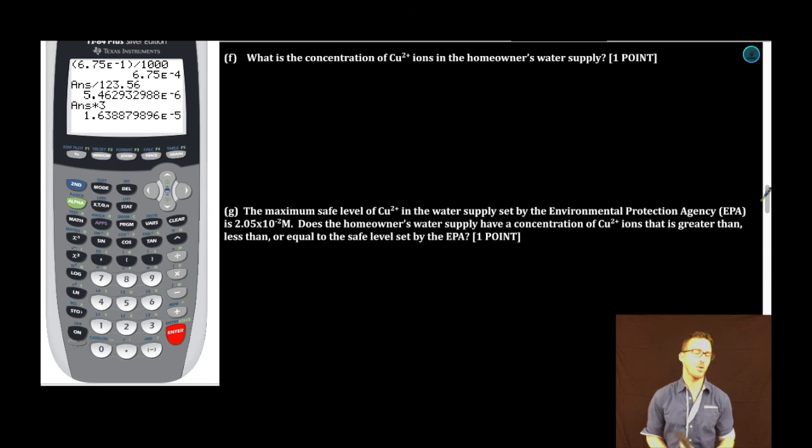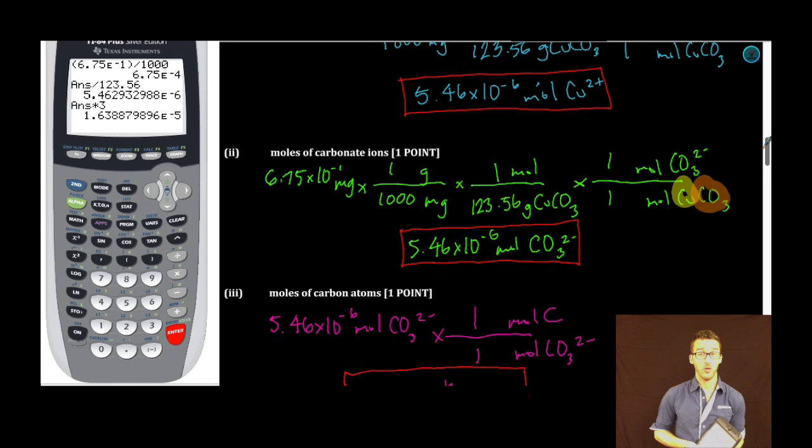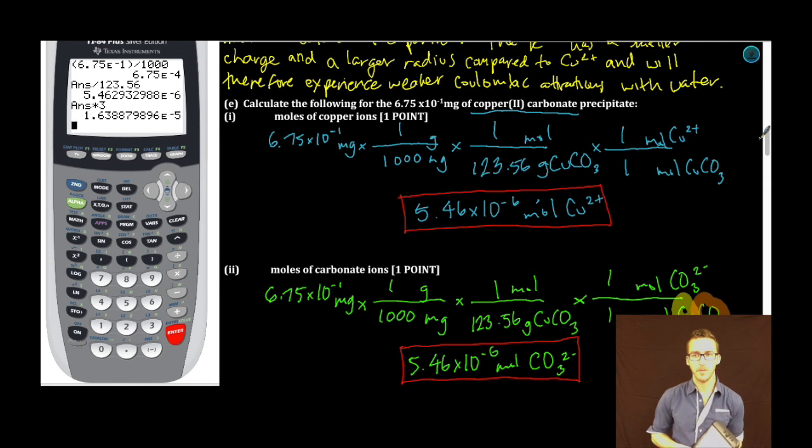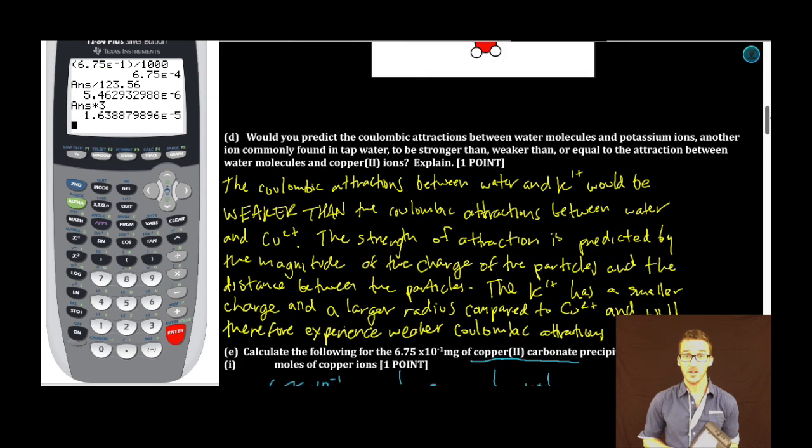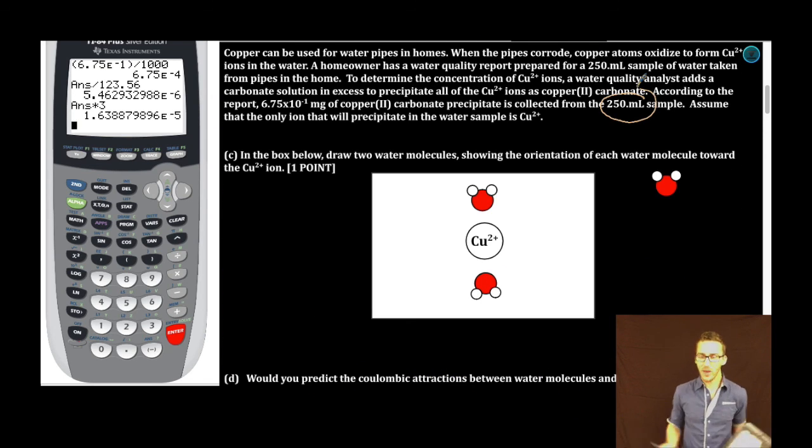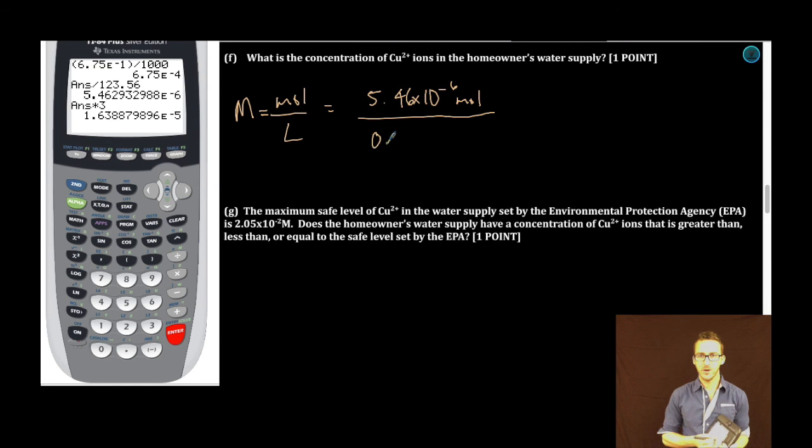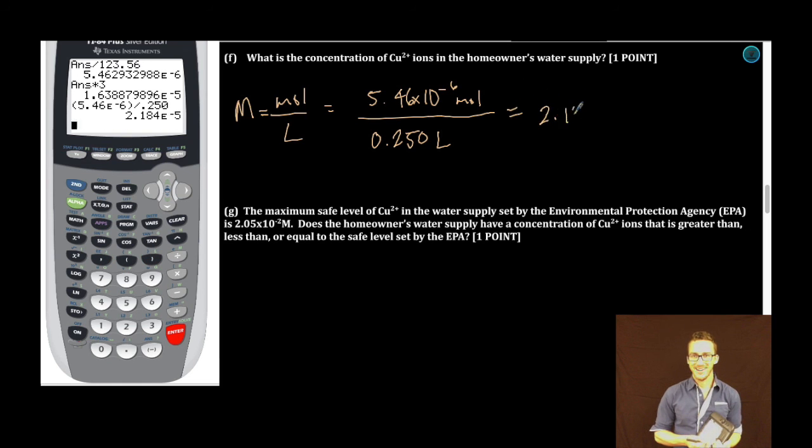And that brings us to part F for fantastic. What is the concentration of copper two plus ions in the homeowner's water supply? When you say concentration, I think molarity, which is a relationship between the moles and volume in liters of a solution. We're looking for copper two ions. We know the number of moles of copper two ions in the sample because we solved for it in an earlier part, 5.46 times 10 to the minus six. And our volume in liters also given to us earlier in the problem: 250 milliliters or 0.250 liters. Quick jump to my calculator. My concentration is 2.18 times 10 to the minus five molar.